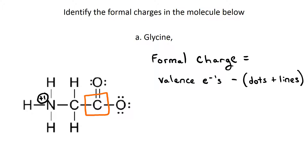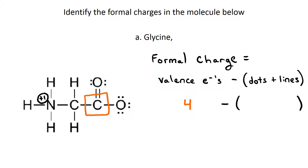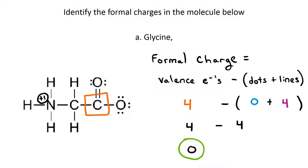Moving to the next carbon — that also is in group 4A, so it has four valence electrons. There are zero dots around it and four lines. So it's four minus four, or zero charge on that carbon.